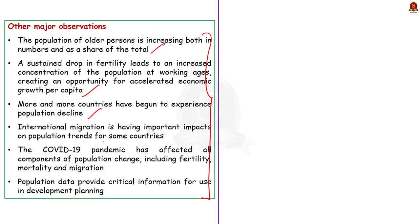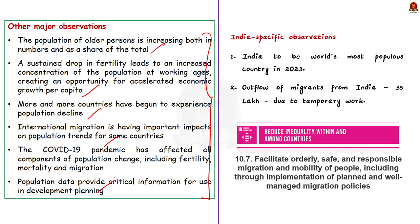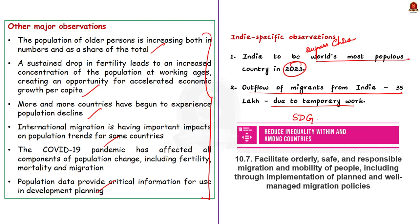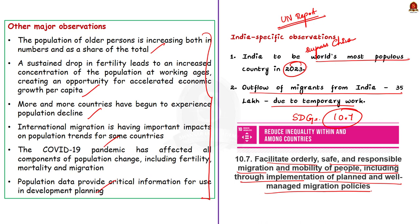Turning to the India-specific observations from the report: first, India is projected to surpass China as the world's most populous country in the next year - 2023. Second, about 35 lakh Indians go out of India every year due to temporary work in other countries. The report calls for countries to achieve sustainable development goal target 10.7, which calls for facilitating orderly, safe, and responsible migration and mobility of people through well-managed migration policies.